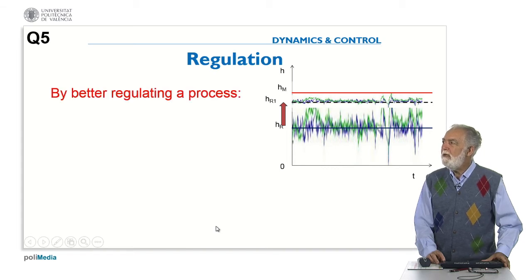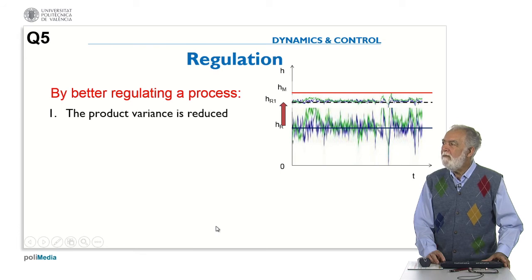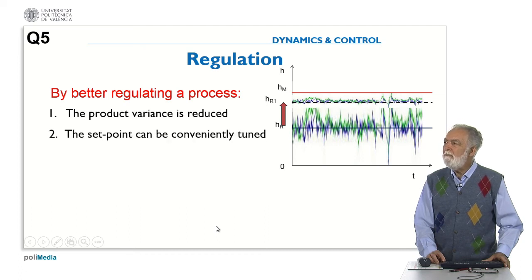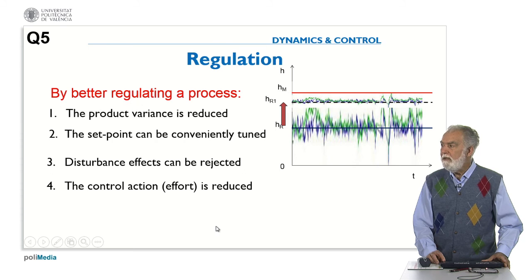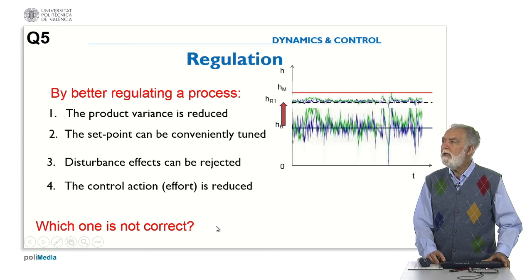So we have a process and we want to improve the regulation. Then the product variance is reduced - this is one of the options. The set point can be conveniently tuned - this is another option. The disturbance effects can be rejected. Or finally, the control action, the effort, is reduced. So which one is not correct? If we are looking for better regulating of this process, which one of these four sentences is not correct? Please think about that.